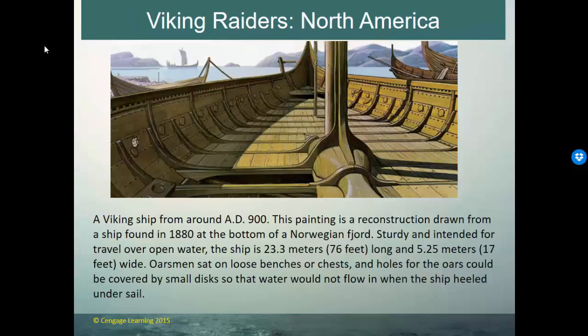Here's an example of a Viking ship from about 900 AD. This painting is a reconstruction from a ship found at the bottom of a Norwegian fjord back in 1880 — a very standard setup for an ocean-going vessel. The Vikings had tremendous success in their era in conquest because they had understanding and innovative ideas about seafaring and shipbuilding.